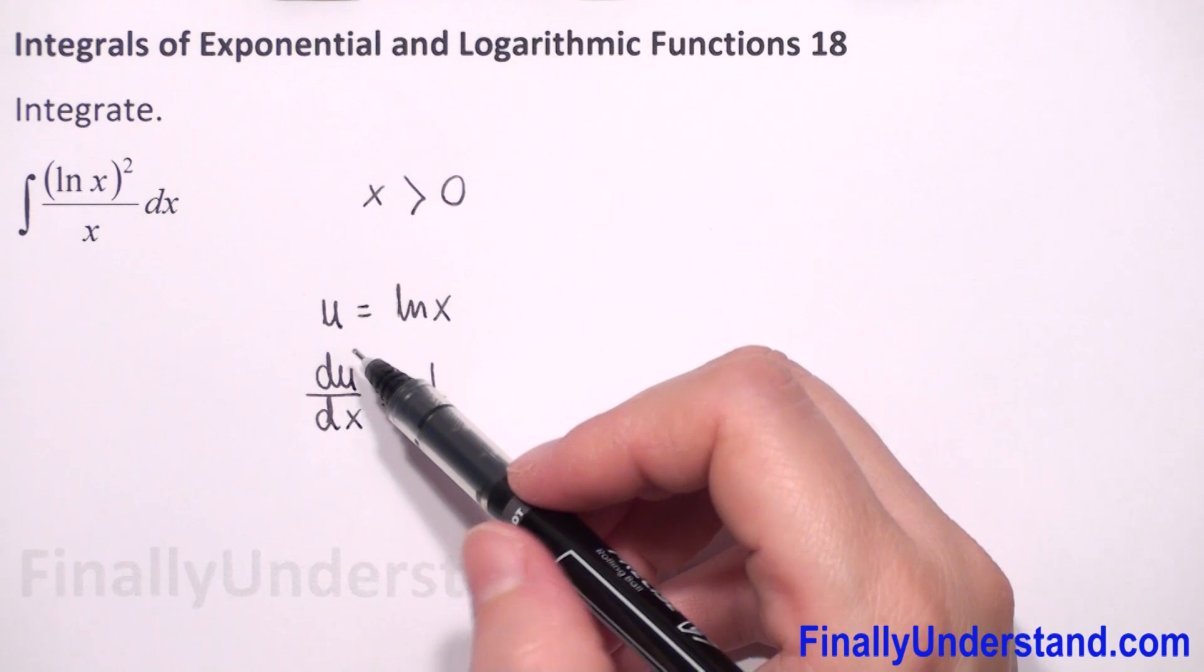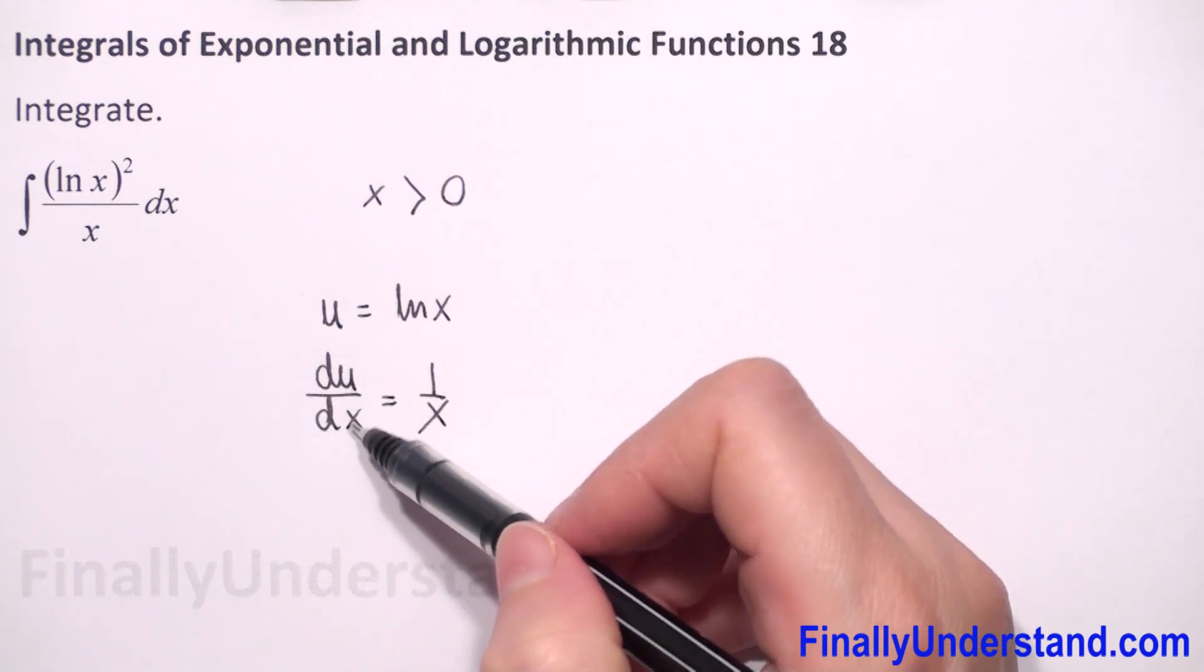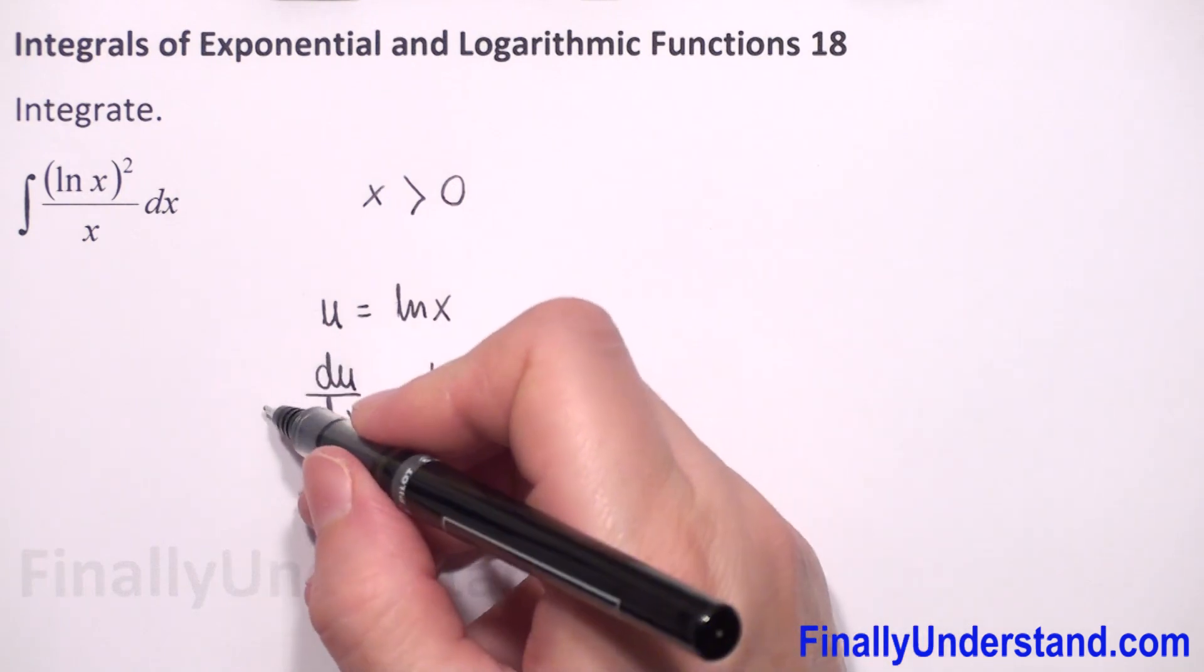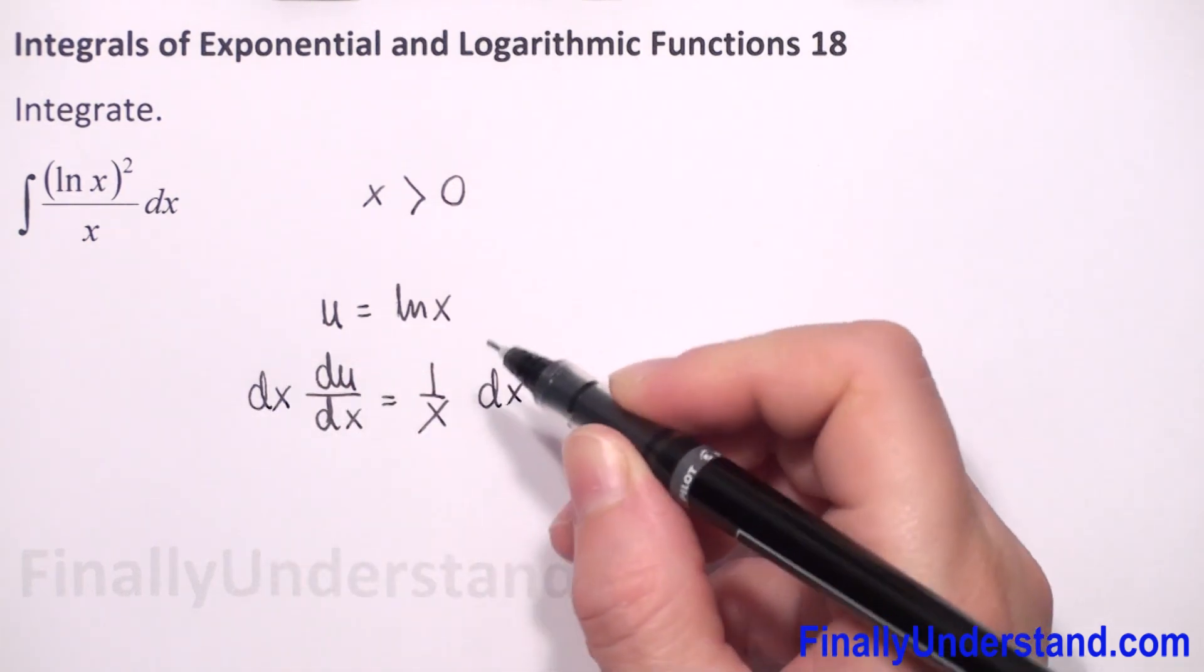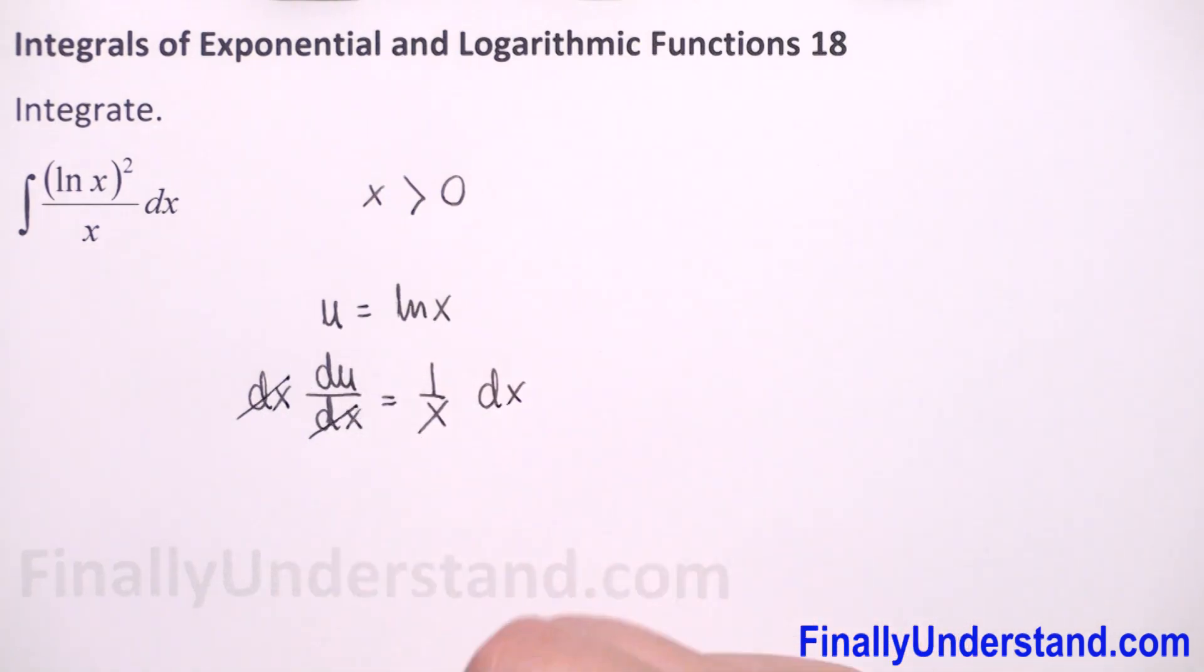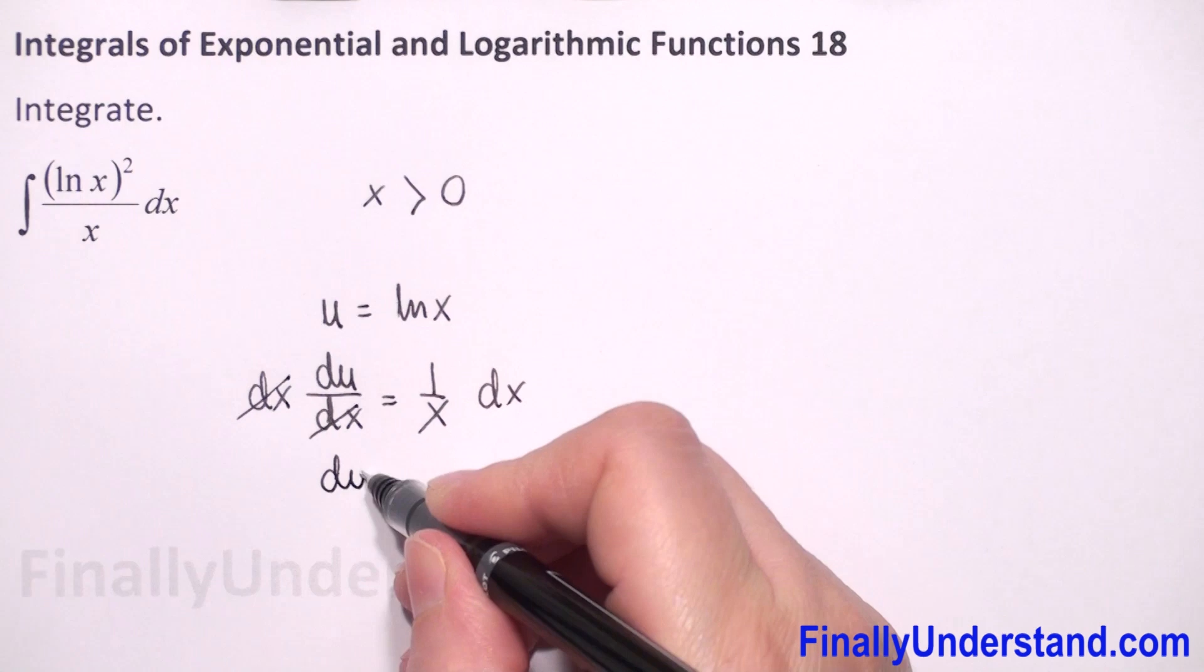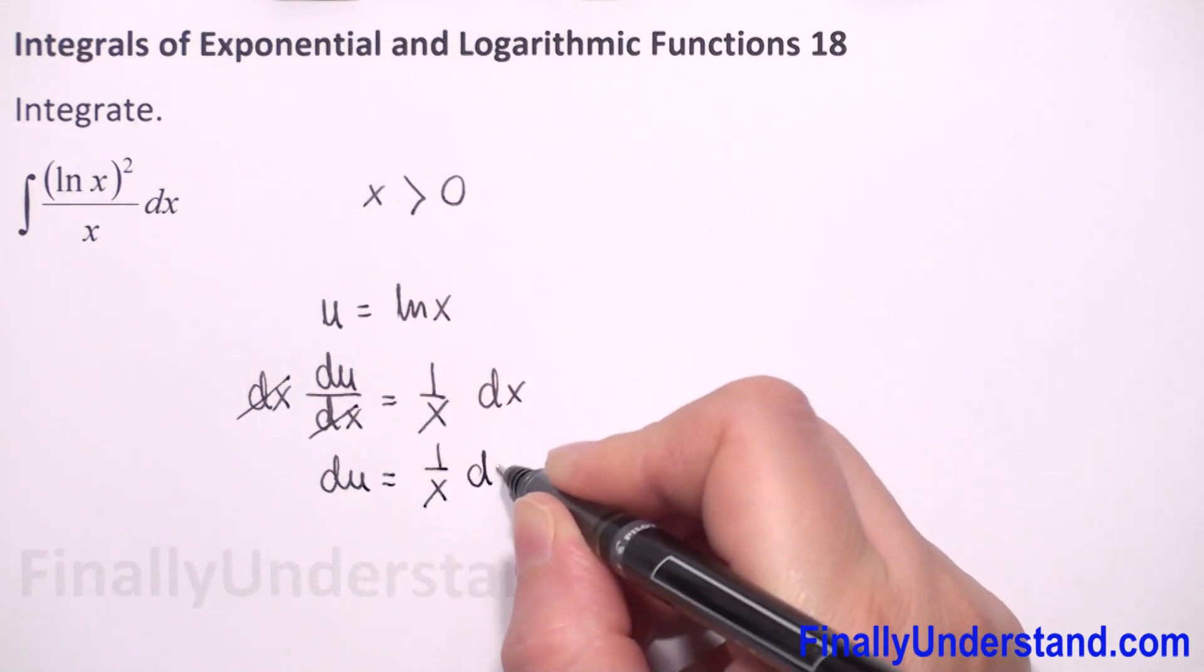Now, because we do u substitution, we have to find du. We have du over dx. So I will multiply both sides of our equation by dx. So we have dx and dx we can reduce, and we have du is equal to 1 over x dx.